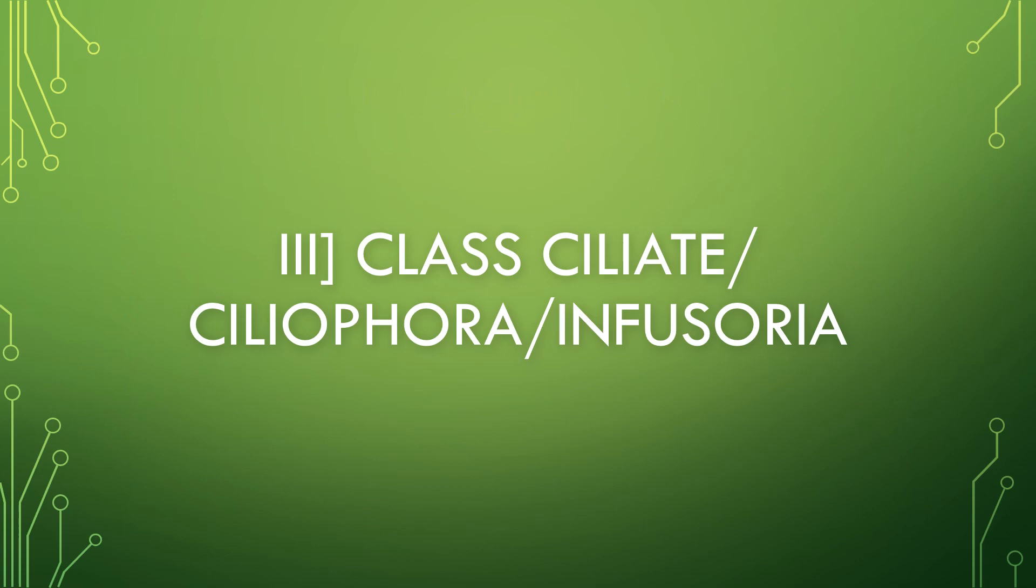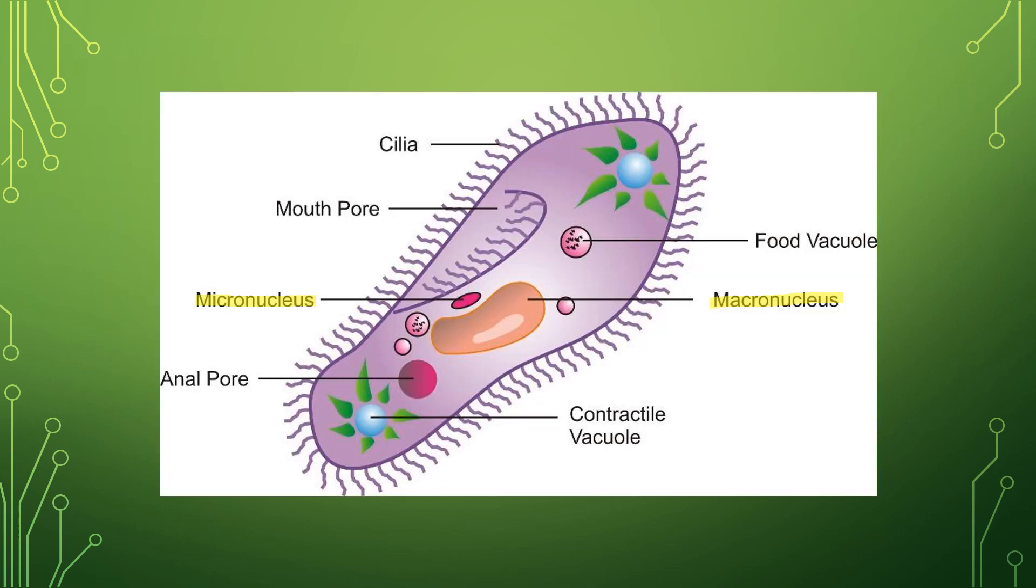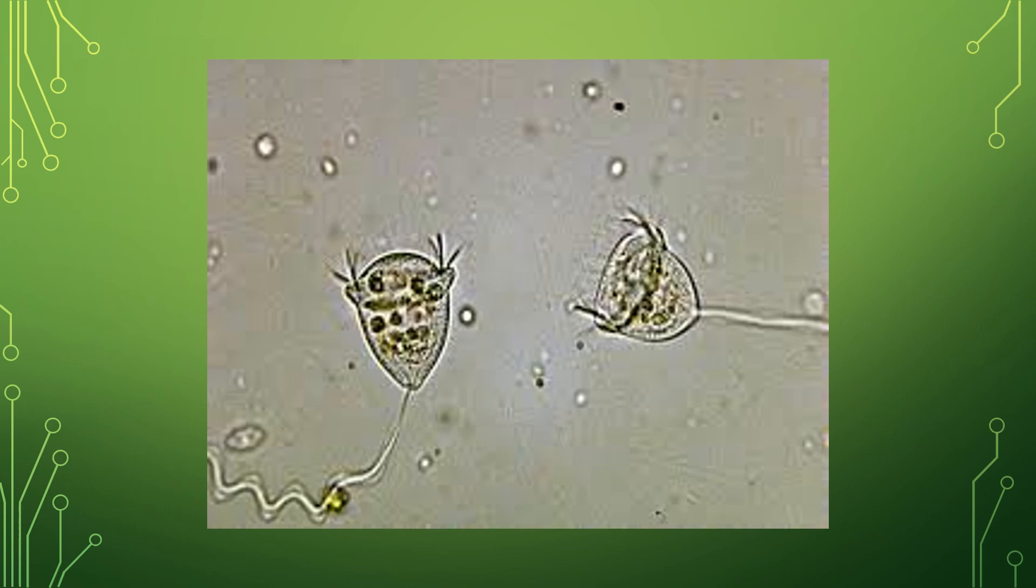The third class is Ciliata or Ciliophora. Now let us discuss its general characteristics one by one. The first one is they are free-living or parasitic. They are binucleated. The nucleus is divided into micronucleus and macronucleus. You can see in this diagram. Their locomotory organs are cilia. Their asexual reproduction is by binary fission, and sexual reproduction is by conjugation, by formation of conjugation bridge.